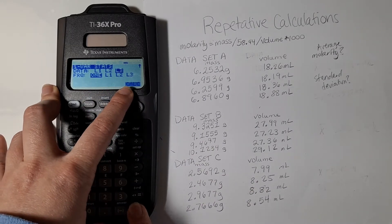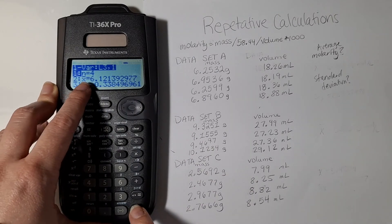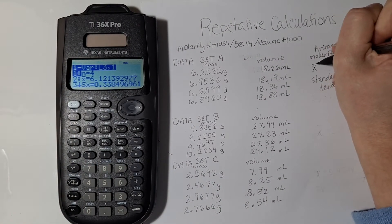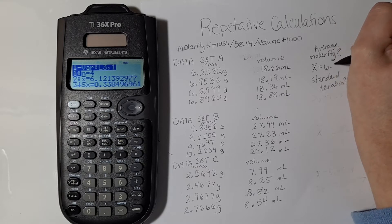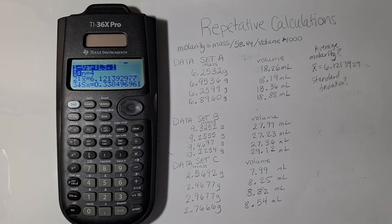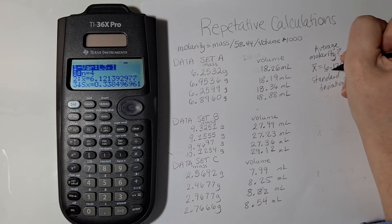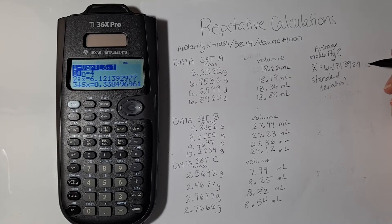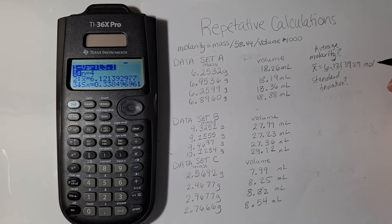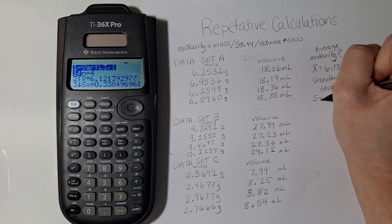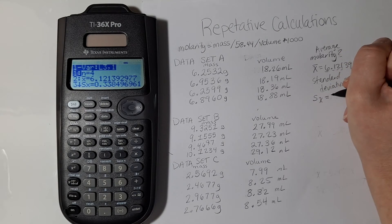Then I'm going to go down here to calculate and it gives me x with a bar over it which is my average, and so my average was 6.12139. I'd only need like four sig figs for that most likely, but you can figure that out later. And then moles per liter. And then my standard deviation, I want sx which has the denominator of n minus 1 in the calculation.